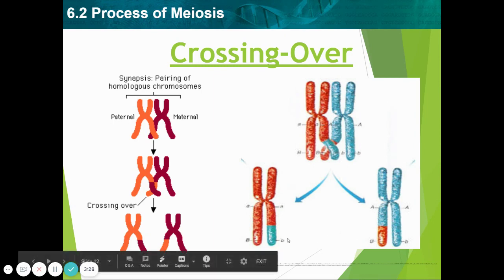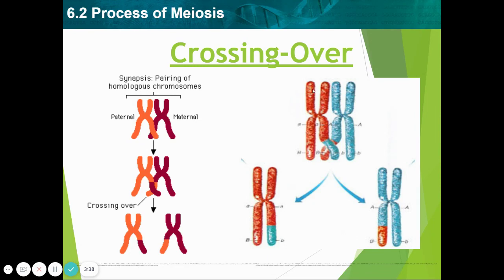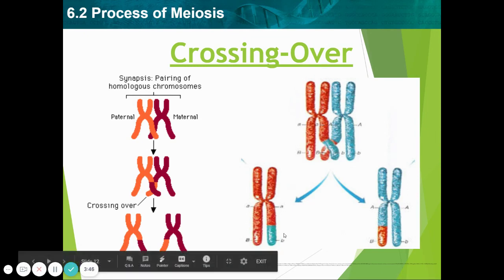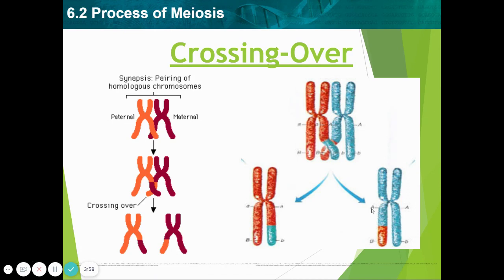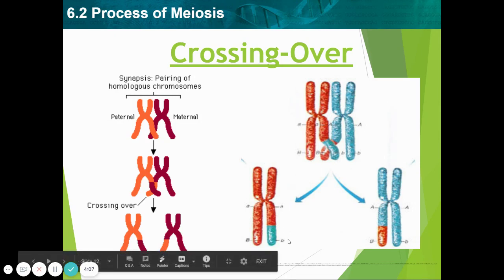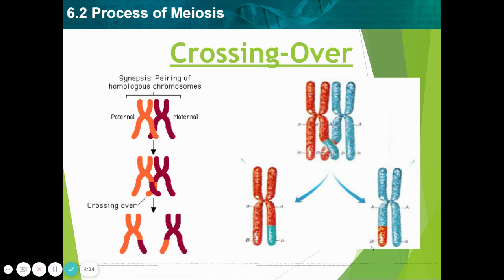What you end up getting are called recombinant chromosomes. This chromosome here is all red and this one is all blue — maybe this one's from mom and this one's from dad. After the crossing over event, the red chromosome now has a little bit of blue, and the blue one has a little bit of red. These letters represent the genes: whereas before the red chromosome had little a's and big B's, now this section has little a's and little b's. The blue chromosome had big A and little b, but now it has big A and big B. This creates genetic diversity, which is essential to the survival of the species.